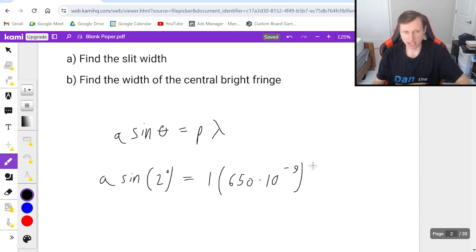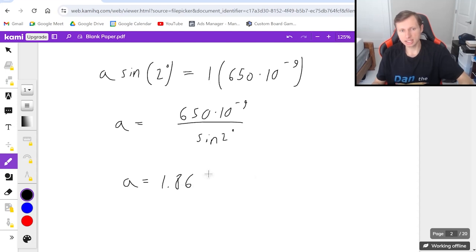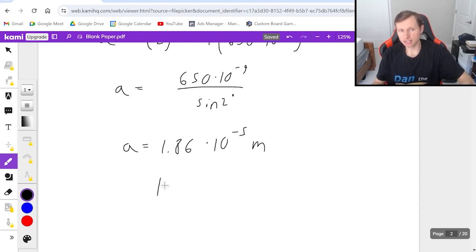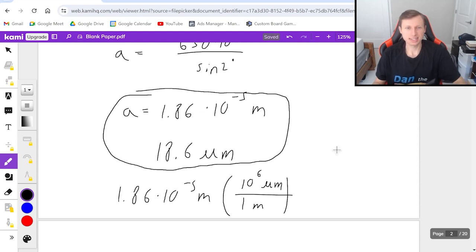Solving for a, I divide both sides by sine of two degrees. That gives 1.86 times 10 to the minus fifth meters, or 18.6 micrometers. To convert, multiply 1.86 times 10 to the minus fifth meters by the conversion factor of 10 to the sixth micrometers per meter. Both answers are correct depending on what your teacher likes.